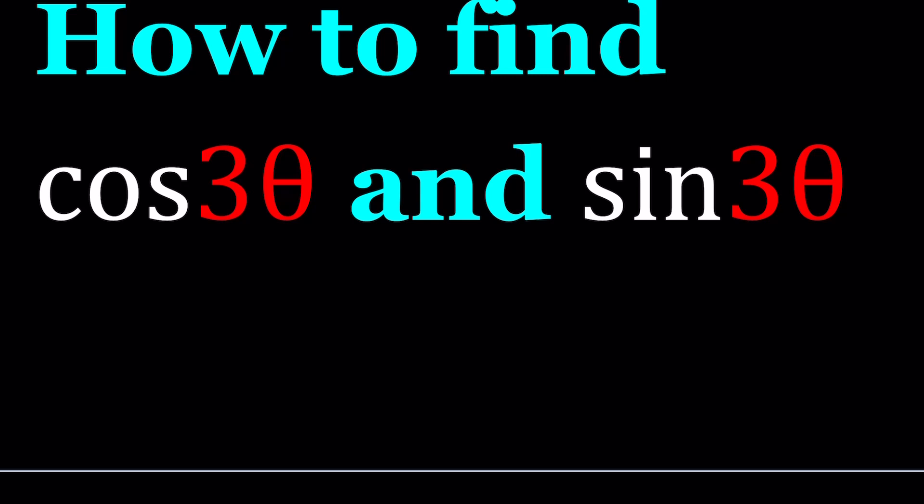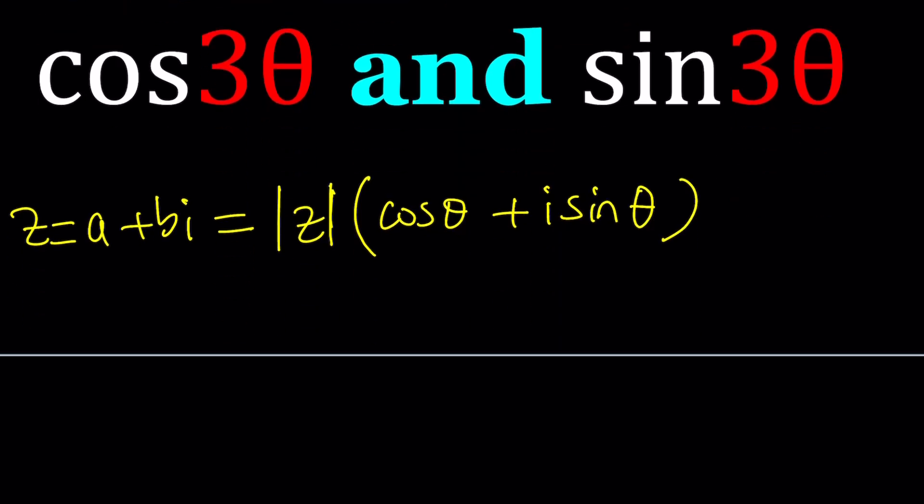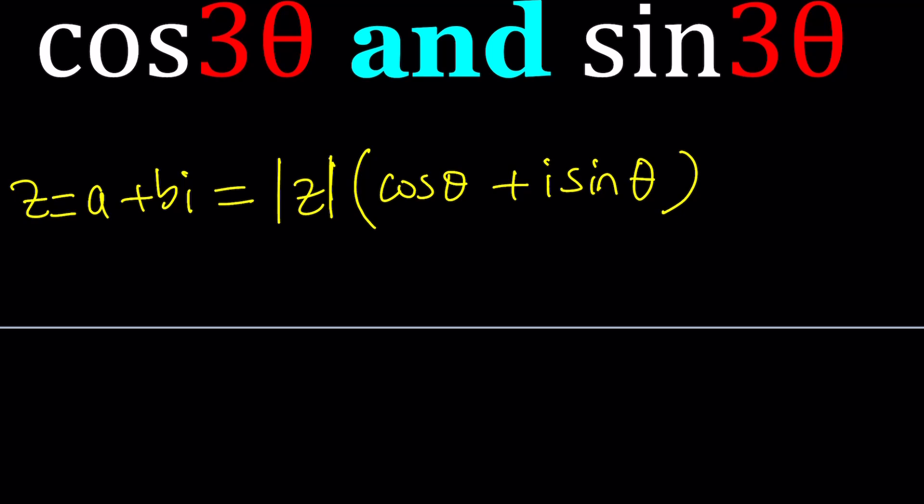The polar form is basically if you have a complex number like A plus B I it can basically be written as the absolute value, and by the way I'm going to call that Z. Absolute value of Z multiplied by cosine theta plus I sine theta, where absolute value of Z is just called the modulus or just absolute value and theta is called the argument of Z or just ARG in short.